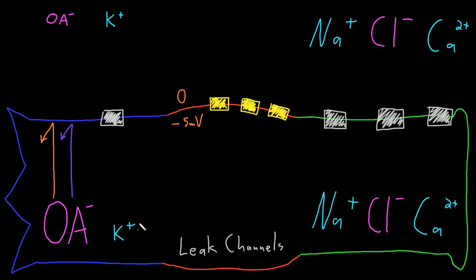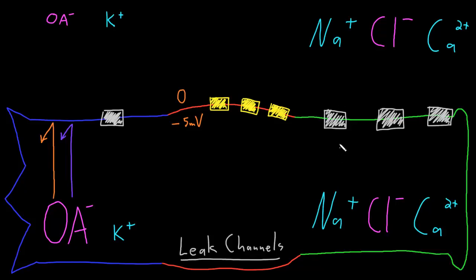The same is not going to be true for the other ions, because the neuron membrane has channels called leak channels or leakage channels. These channels allow ions to pass across the membrane, although how easily they cross is very different for different ions. These leak channels are open all the time — they're not gated, so they're not opening and closing in response to some kind of stimulus.